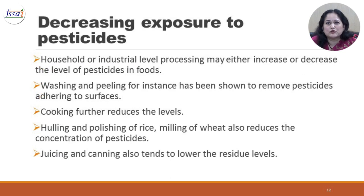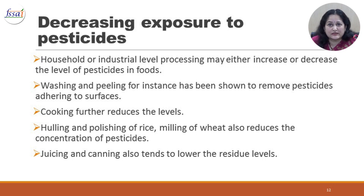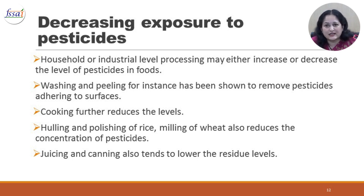How to decrease exposure to pesticides? Household or industrial level processing may either increase or decrease the level of pesticides in foods. Washing and peeling has been shown to remove pesticides adhering to surfaces. Cooking further reduces these levels. Hulling and polishing of rice, milling of wheat also reduces the concentration of pesticides. Juicing and canning also tends to lower residue levels.